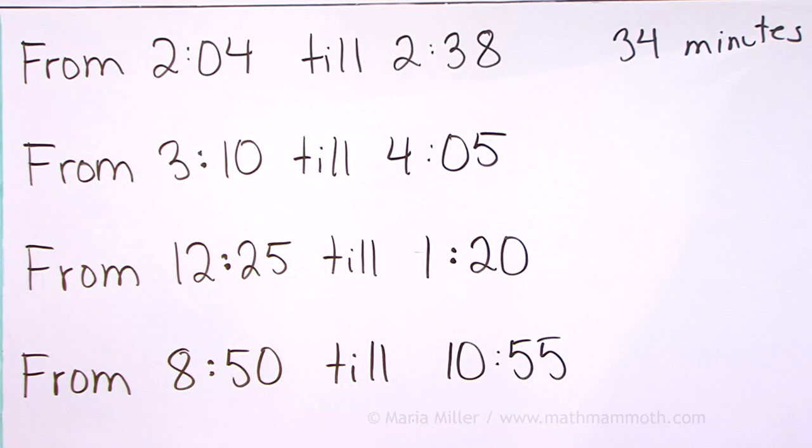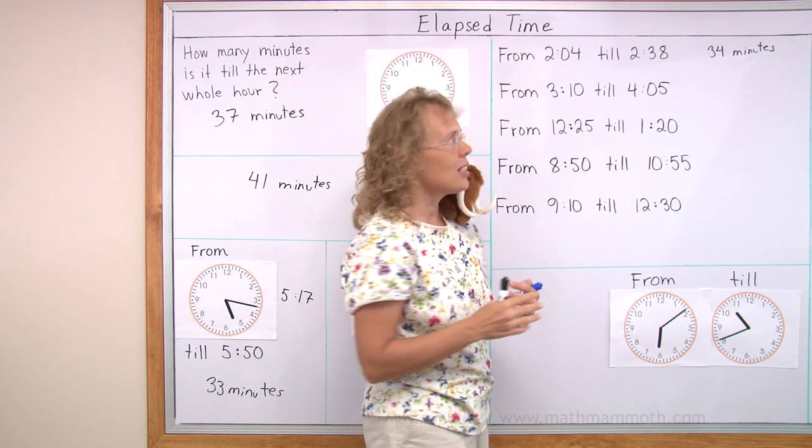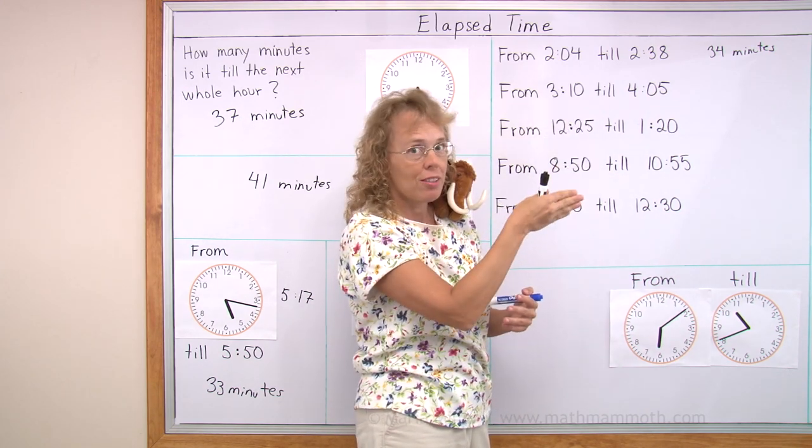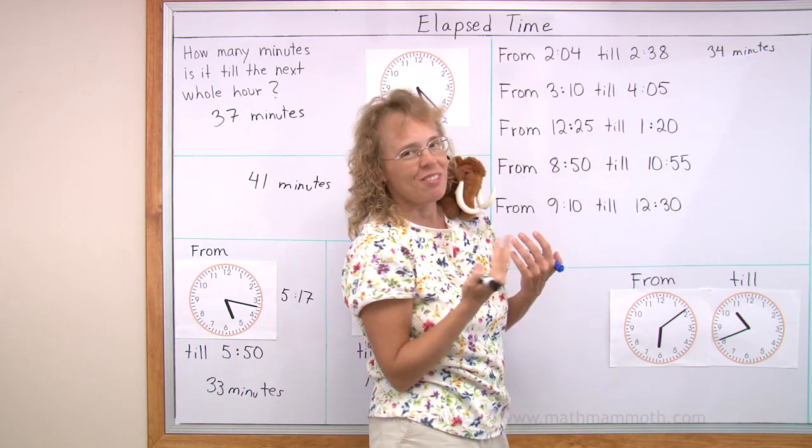How about from 3:10 till 4:05? Now the hour changes. From 3 till the next hour, 4. So figure that one in two parts. From this time till the next whole hour, till 4 o'clock. And then from 4 o'clock till 4:05 would be, of course, just 5 minutes.